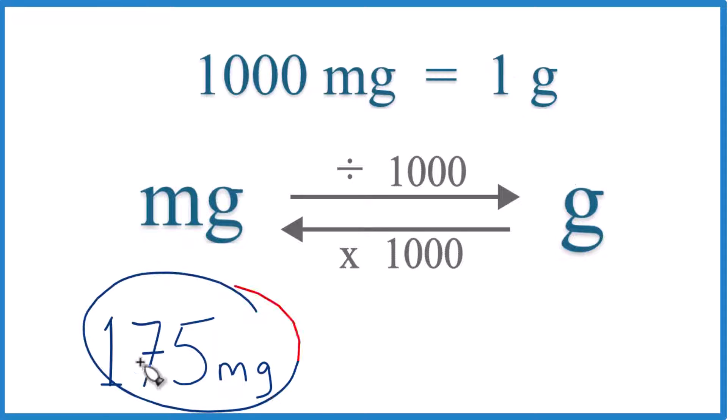Here's how you convert 175 milligrams to grams. First off, 1,000 milligrams, that equals one gram.